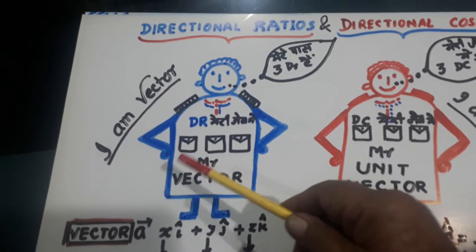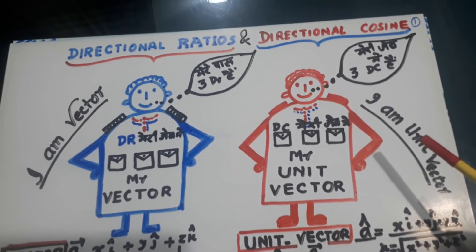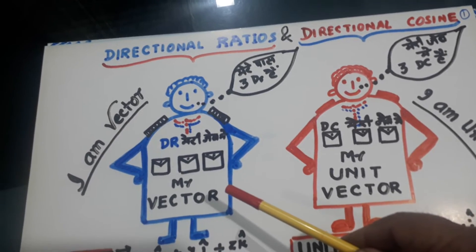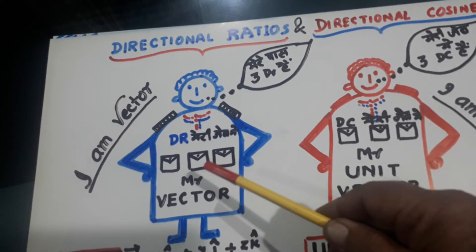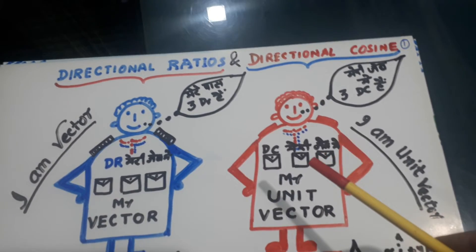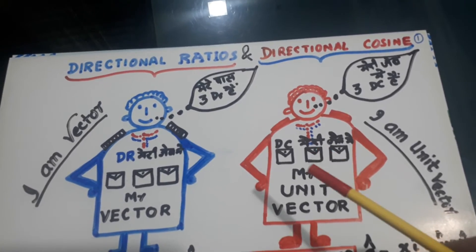What he says, I am vector and he says, I am unit vector. He says, I have three doctors in my pocket. He says, I have so much pride, I have three DCs in my pocket.